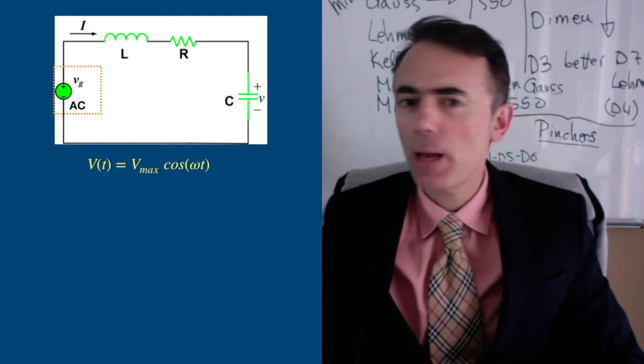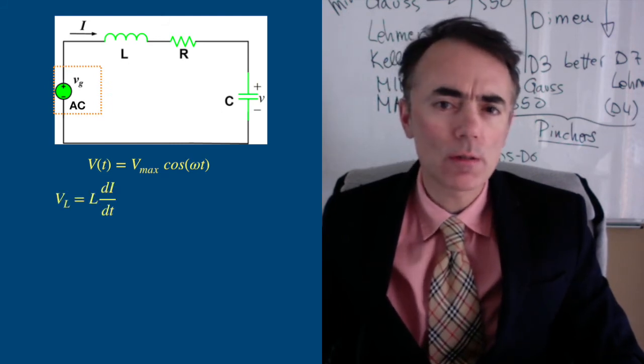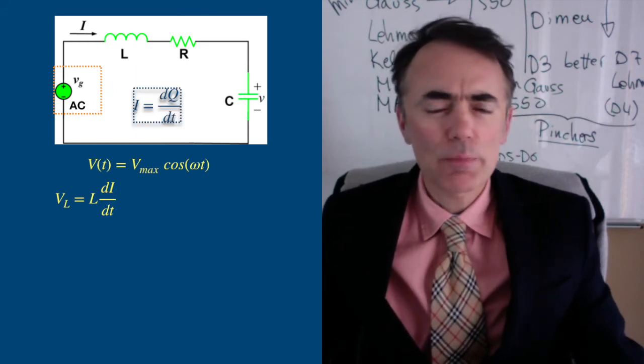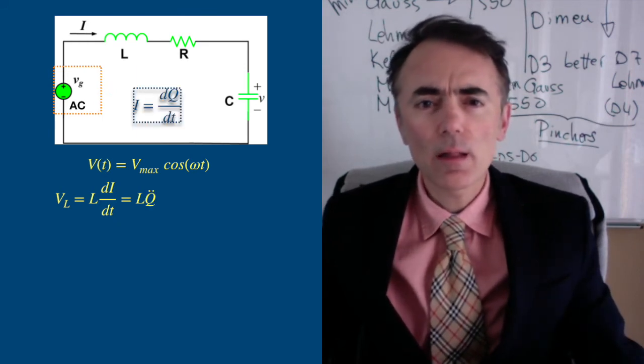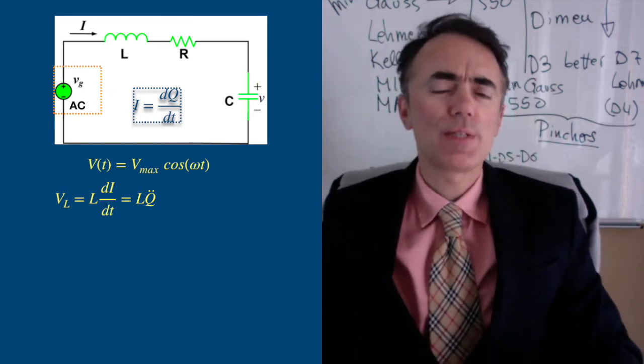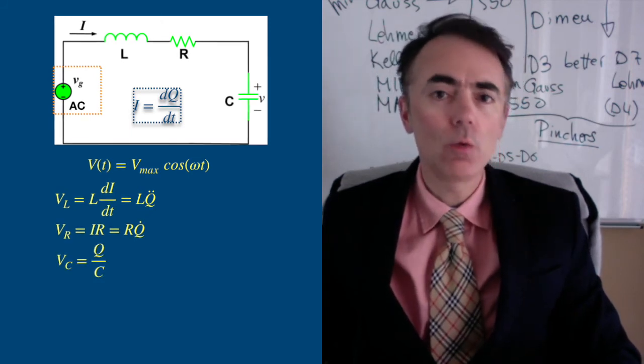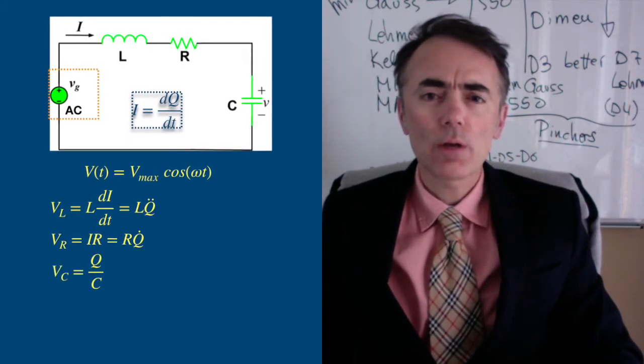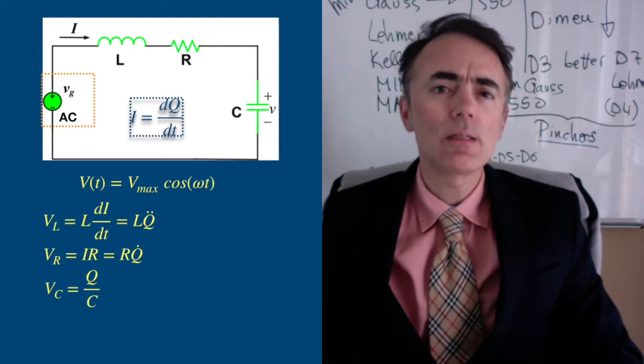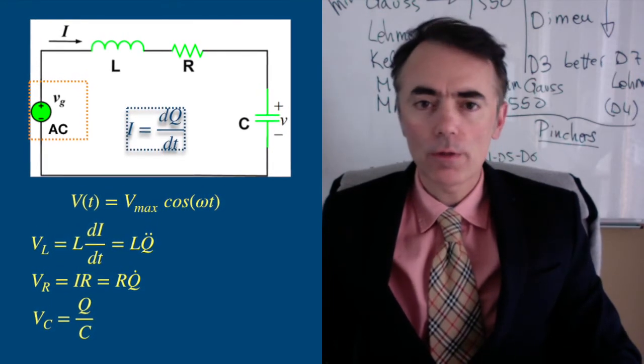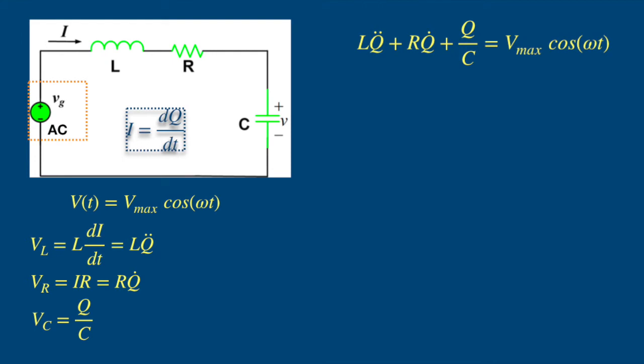The voltage delivered by the power supply is given by Vmax times cosine of omega t. From what we know from electricity and magnetism, the voltage across the inductor is L times di dt, which, because the current is the derivative of the charge with respect to time, we can write as Lq two dots. The potential across the resistor is Ri, or Rq dot, and the potential across the capacitor is Q over C. Here L is the inductance of the inductor, R is the resistance of the resistor, and C is the capacitance of the capacitor. From the voltage drop across the elements of the closed circuit, we have that Lq two dots plus Rq dot plus Q over C is equal to Vmax cosine of omega t.